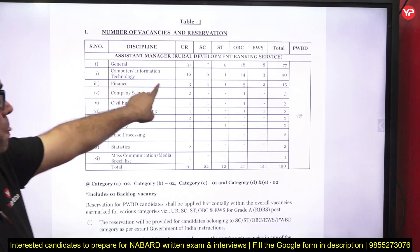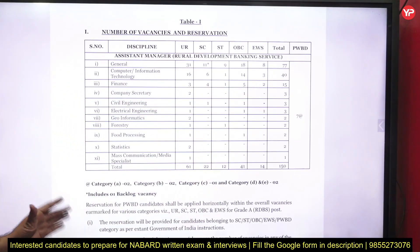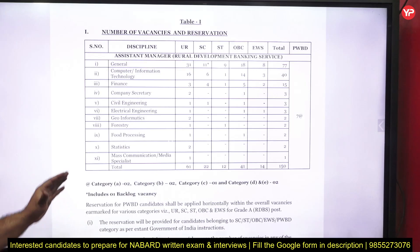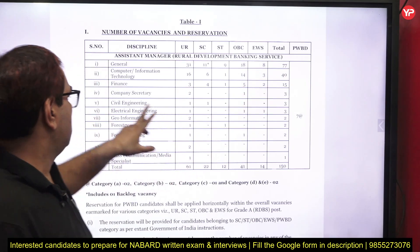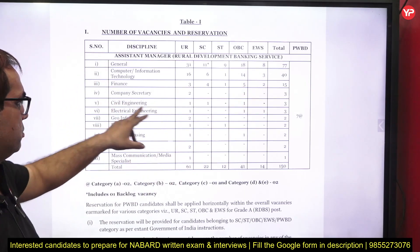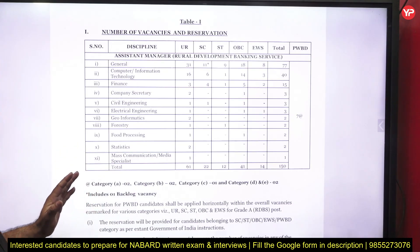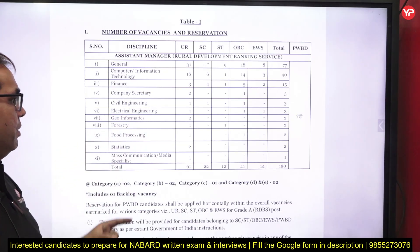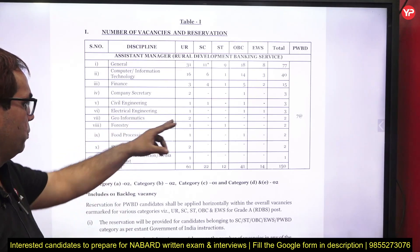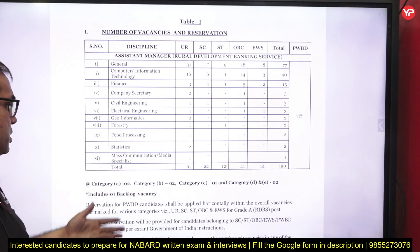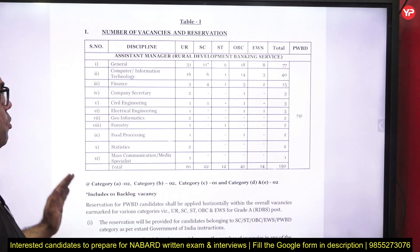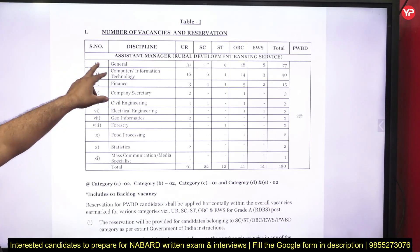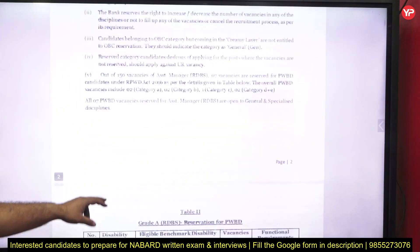This is very good news for computer science engineers. For finance there are 3 vacancies in the unreserved category, with 15 total vacancies. For company secretary there are 2 vacancies; for civil engineering only 1 vacancy in the unreserved category; electrical 1; geo-informatics 2 vacancies; then forestry, food processing, statistics, and mass communication are also listed. Computer science has the most vacancies overall.